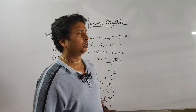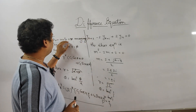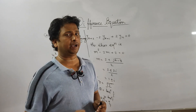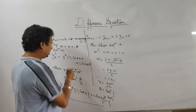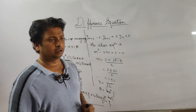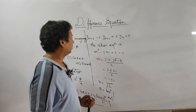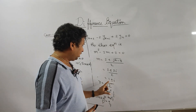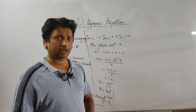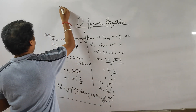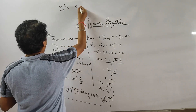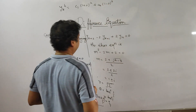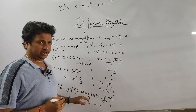This is Case 3. When roots are imaginary, just calculate the modulus and argument of the complex number and substitute r and theta in the formula. There is also an alternative method: since roots are 1 plus iota and 1 minus iota, you can also write y_k^h equals c1·(1+i)^k plus c2·(1-i)^k. Both forms are correct, but the trigonometric form is the better approach.